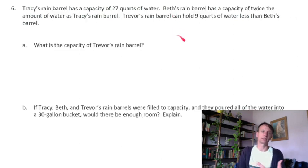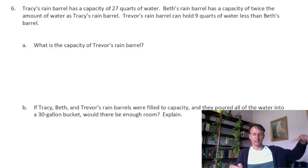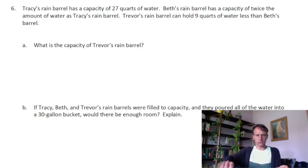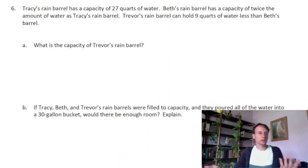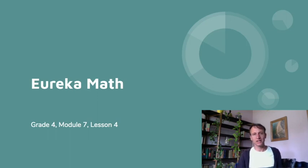The last homework problem involves Tracy and her rain barrel. Rain barrels attach to the downspout of your gutters; when it rains, the barrel fills up and you can use a hose at the bottom to water your plants with rainwater — rain barrels are awesome. And look what you've done: you've finished another lesson. Kudos to you, and I will see you next time. It is once again lesson time!